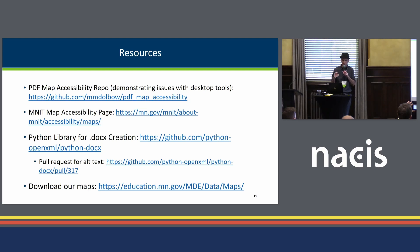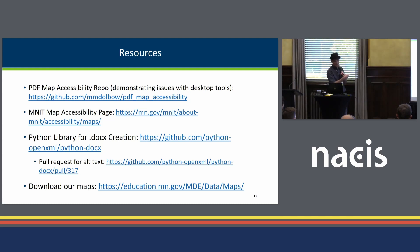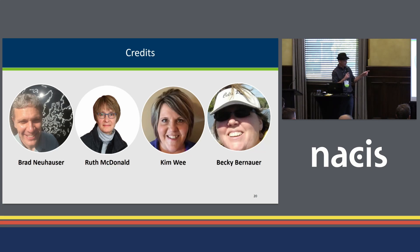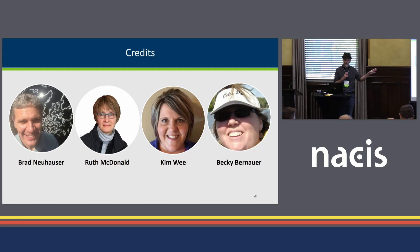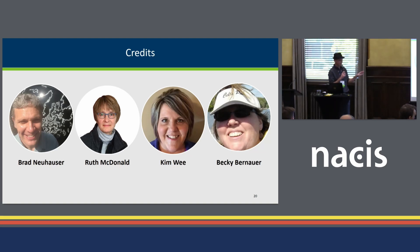The Minnesota map accessibility page, which Amy talked about yesterday, has really great resources — that's where you can get the base code that I started from. Links to that Python library for docx creation and the open pull request for that. And at the bottom, you can download these maps. They're much nicer when you download them and look at them on a screen. Before I wrap up, I have some credits: Brad with the Secretary of State's office was the first in my circle with this idea of using that Python library to create Word documents, and Ruth helped package up that code. My colleagues Kim and Becky helped me immensely with checking my PDF files to make sure the logical reading order is working and things are at the right spot on the tag tree.